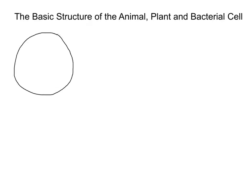So let's start with the animal one first. What we're going to do is draw each part in and then I'll explain what they are. So you've got an outer part first of all here, and we can straight away go to label that, because that outer part that I've just drawn is what's called the cell membrane.